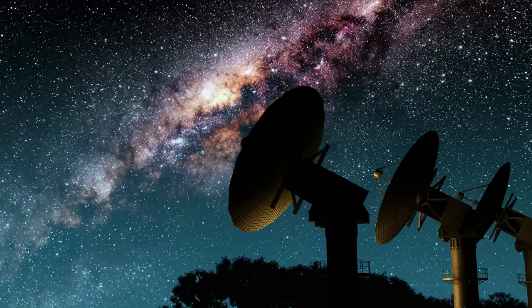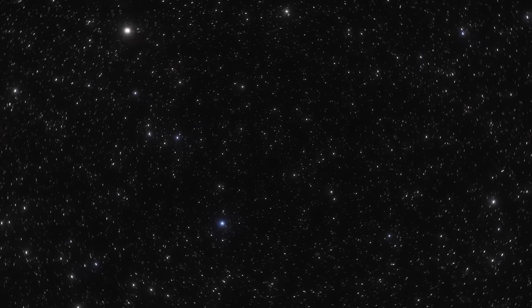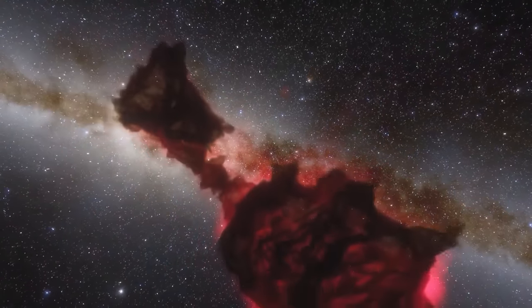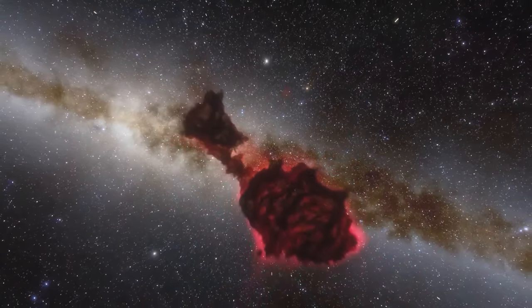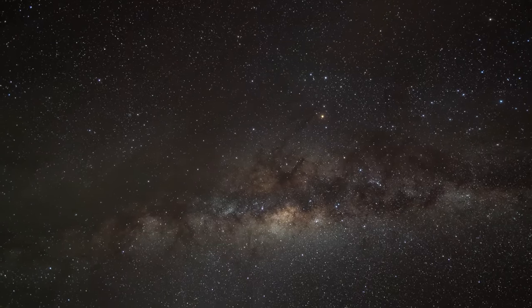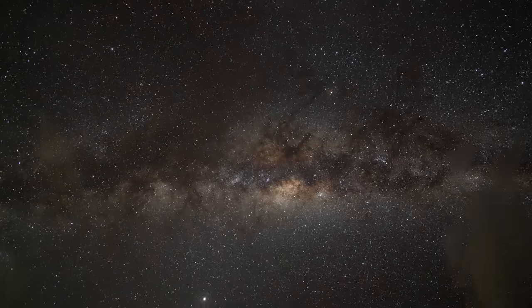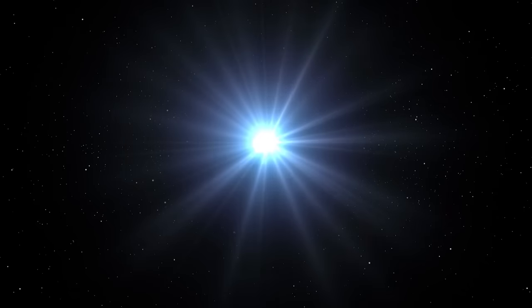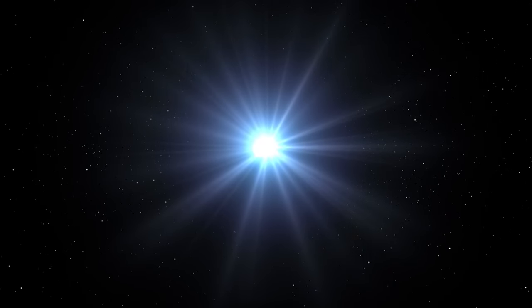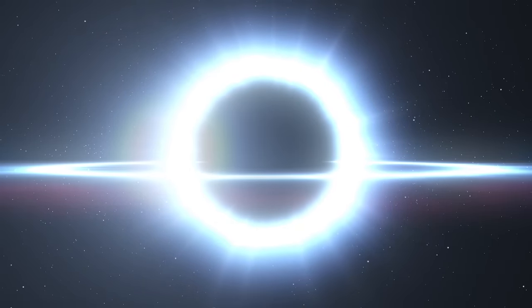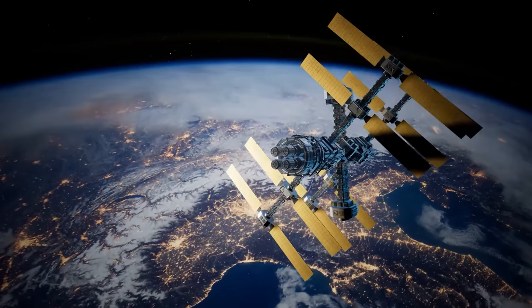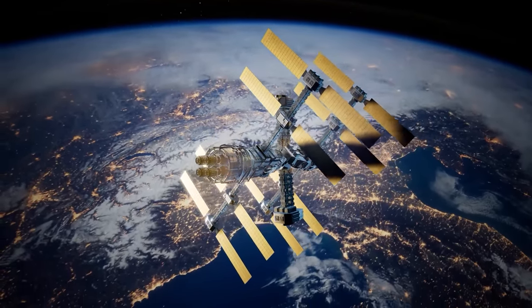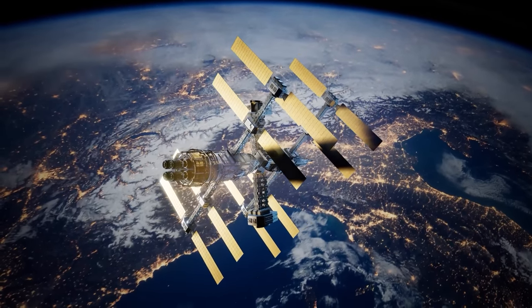But why should the universe be flat? The inflationary theory of the early universe provides a possible answer. According to this theory, in the first fleeting moments after the Big Bang, the universe underwent an incredibly rapid expansion faster than the speed of light. This expansion stretched out any initial curvature the universe might have had, leading to a cosmos that appears flat across even the largest distances we can observe.